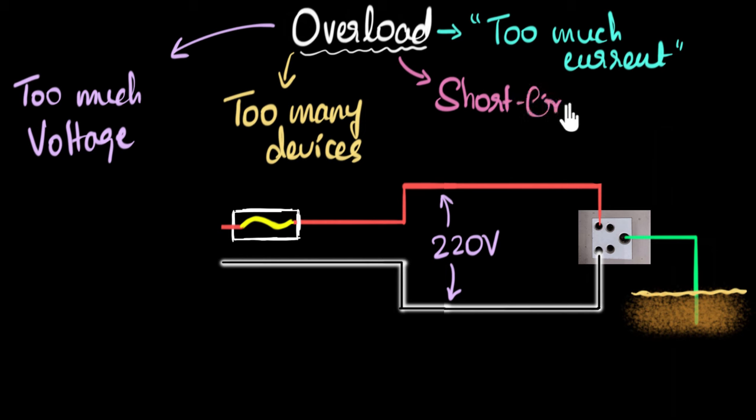All right, another way of having overload or of getting overload would be to create something called a short circuit. Short circuit. Again, you may have heard of this word. What does the word short circuit mean? In short, it kind of means you're creating a low resistance path.